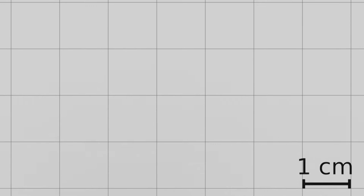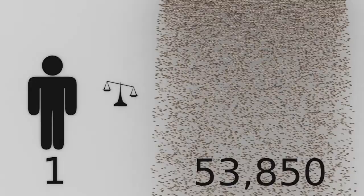Well, one of the smallest mammals in the world is a white-toothed pygmy shrew. A fully grown adult can get to be 4 centimeters long and weigh 1.3 grams. This means that it would take about 40 of these shrews tail to snout in a line to equal the length of one average human. Also, we would need about 53,850 white-toothed pygmy shrews in a pile to equal the weight of one average human. Looking at this, we humans are pretty big.